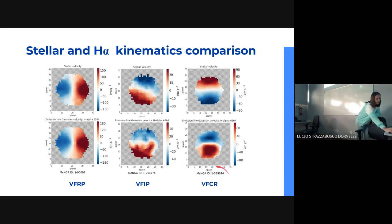The velocity field with counter-rotation is the opposite. Where there is blueshift in one map, there is redshift in the other, and vice versa. The velocity field with irregular pattern is self-explanatory. You cannot define exactly what's going on in the comparison between stellar velocity and H-alpha velocity. The velocity fields are irregular.